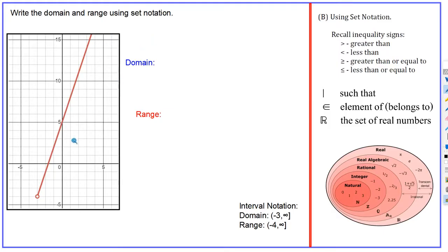One more example — write the domain and range using set notation. This graph looks a little different: it's linear but it also gets cut off. There's a hollow point down here but no point at the other end. Depending on your book, you'll either see an arrow implying it goes on forever, or nothing at all. If they just clip the graph with no endpoint shown, you have to assume it goes on and on forever. For this question, I'm going to put the arrow in — that's what we'd hope would be there.